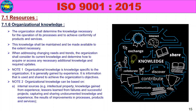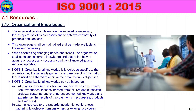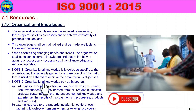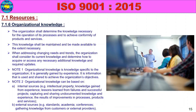External sources of organizational knowledge include: standards, academic conferences, gathering knowledge from customers or external providers. For example, attending outside conferences and meetings, and incorporating customer or external provider requirements and knowledge. This concludes Class 7.1 Resources.